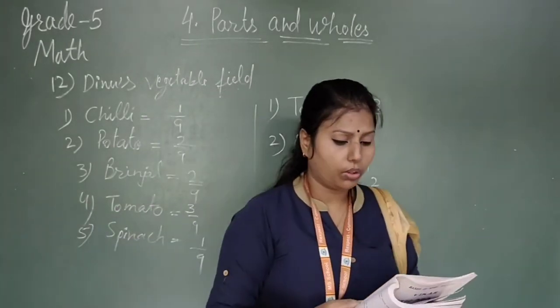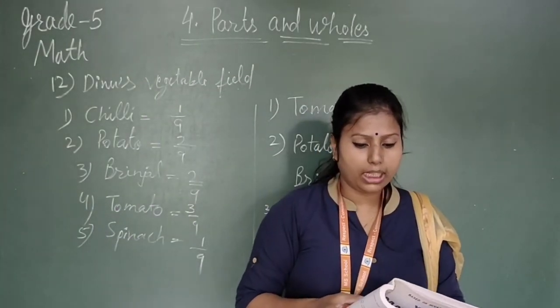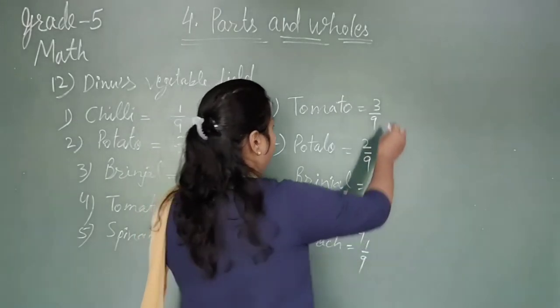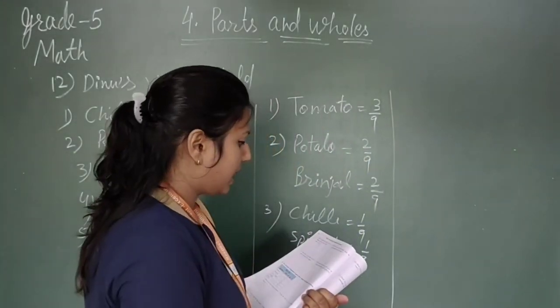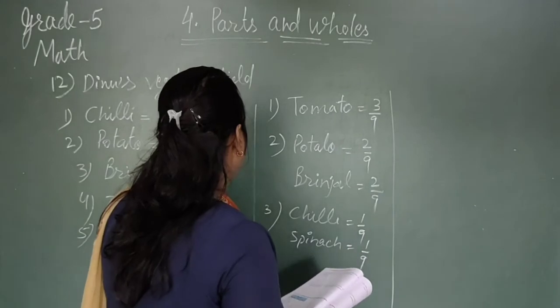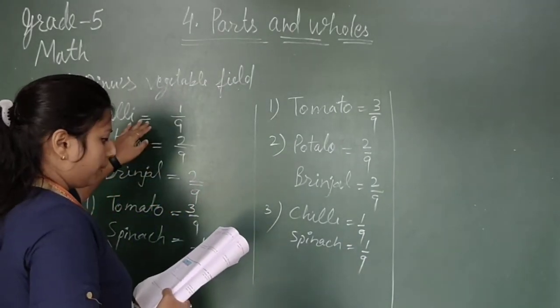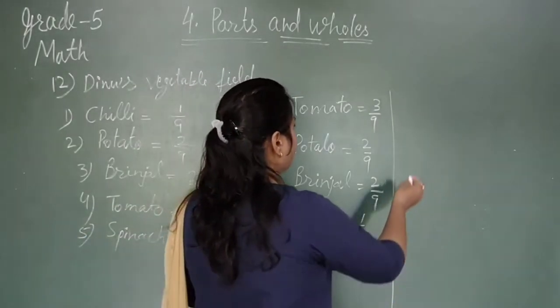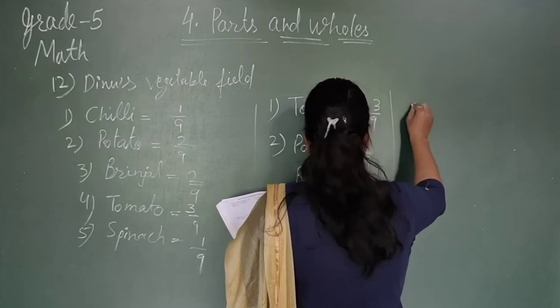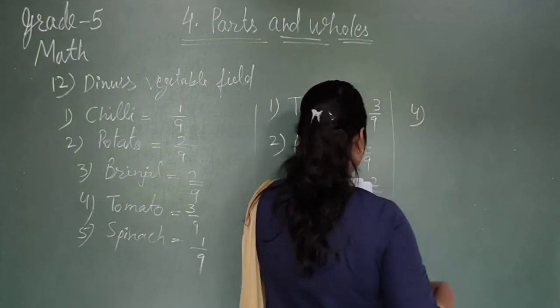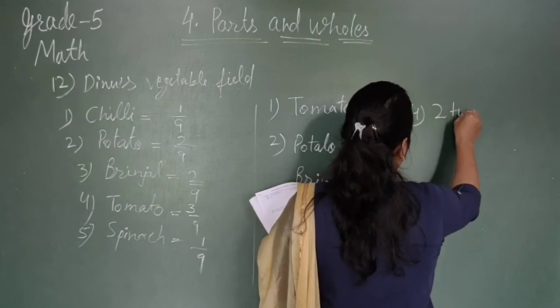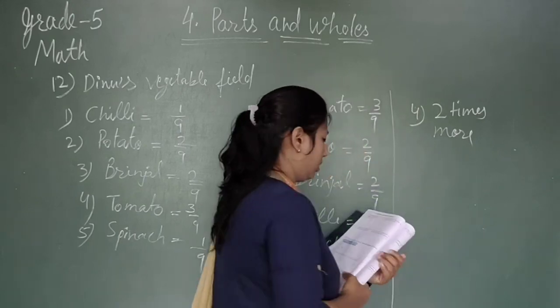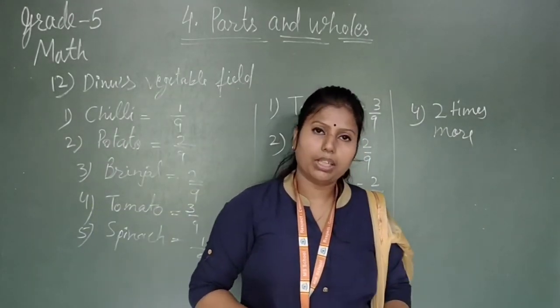Question number 4: How many times more is the part of the potato than the part of the spinach? You can say the part of the potato will be double. You can write two times more is the part of the potato than the part of the spinach.